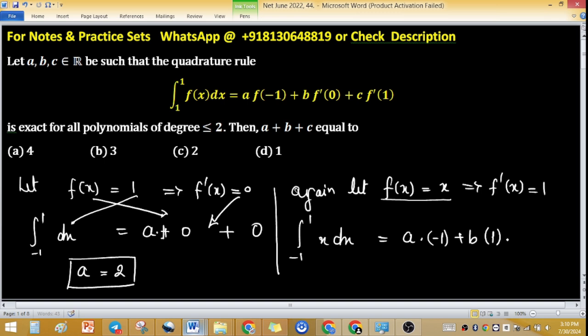This function is an even function, so the value of this one will be 0. And the value of A we have is 2, so 0 equals -2 plus B plus C. This implies B plus C equals 2. Now we have to find the value of A plus B plus C.